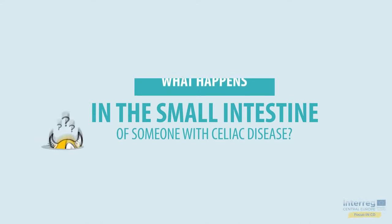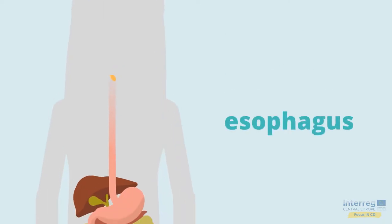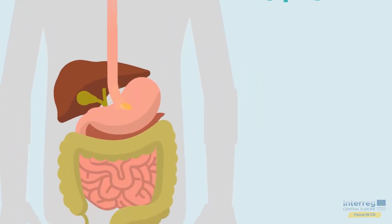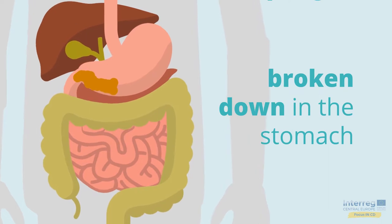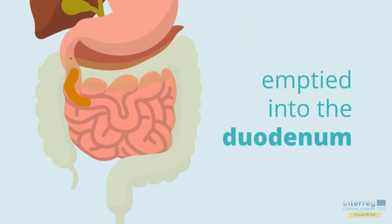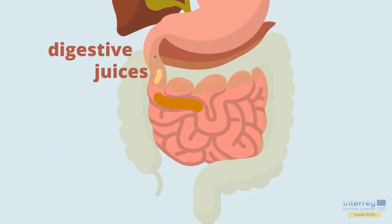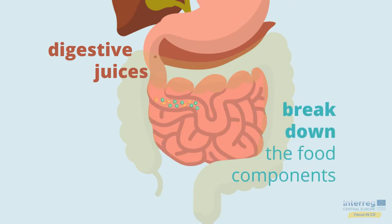To understand what happens in the small intestine of someone with celiac disease, we first have to take a look at our digestive and immune system. When we eat, the food passes down the esophagus, is broken down in the stomach, and emptied into the upper part of the small intestine, called the duodenum. There, it's mixed with digestive juices that further break down the food components and nutrients into small fragments.